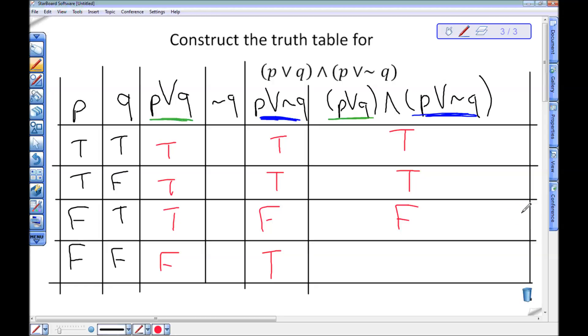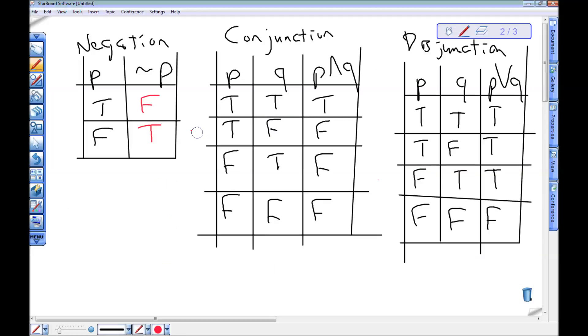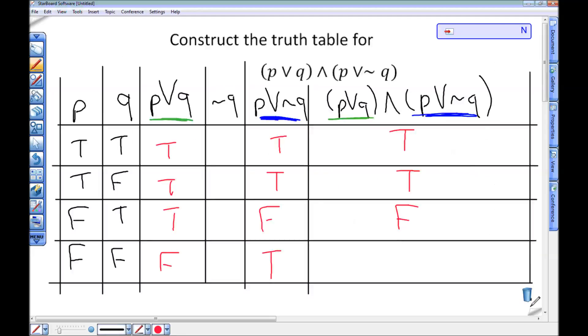And then finally, I have false and true. So I'm going to go back and look. False and true is right here. The table says it's false. So I'm going to put an F right here. I can then uncover my not Q. And I have the full truth table for P or Q and P or not Q.